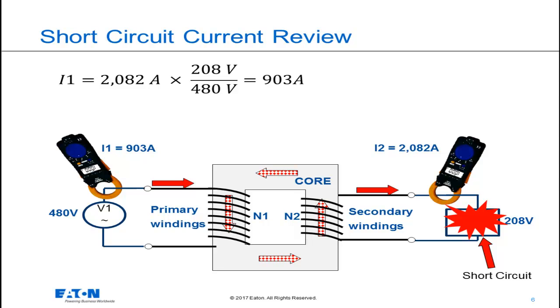From a selective coordination perspective during a fault, the overcurrent protective device on the secondary would see 2082 amps flowing through it. The overcurrent protective device on the primary would only see 903 amps during this same short circuit event.